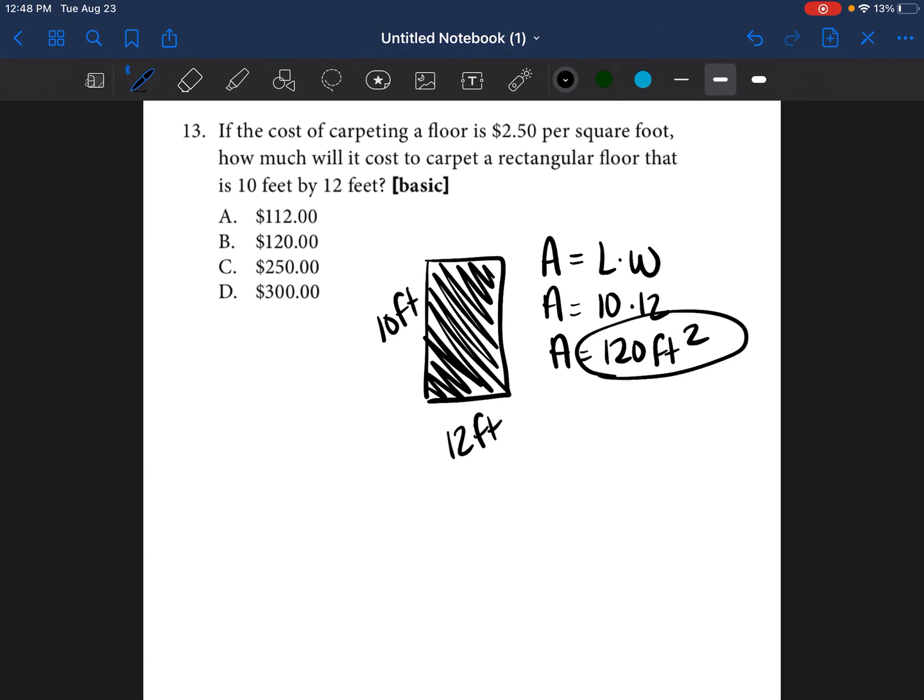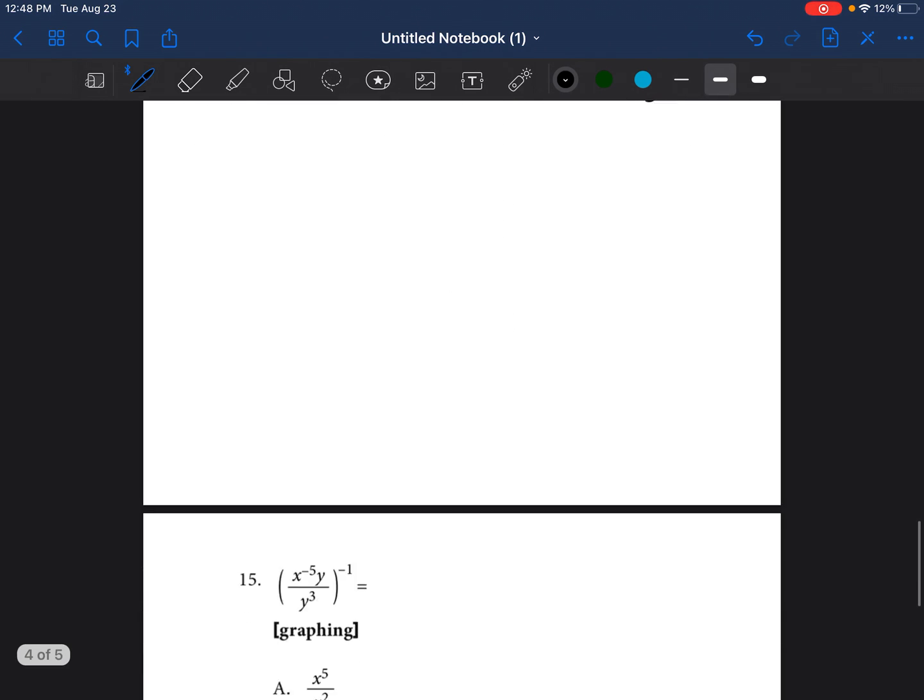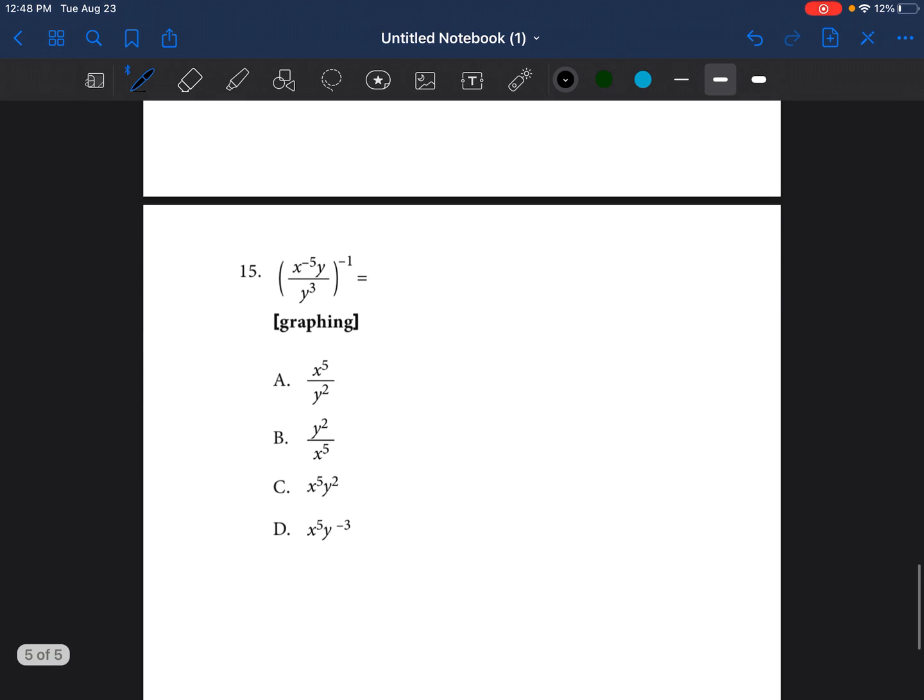So now that we know the total amount of feet that needs to be covered, we're going to multiply it by the price per foot. So we're going to do 120 times 2.50. And we're going to get 300. So our answer is going to be $300. It'll cost $300 to cover that carpet. And so let's go ahead and move on to our final problem.